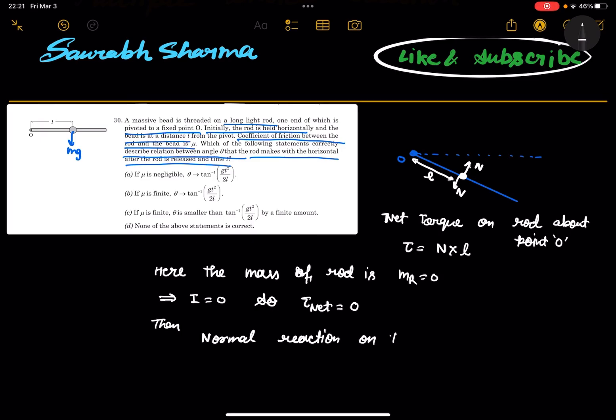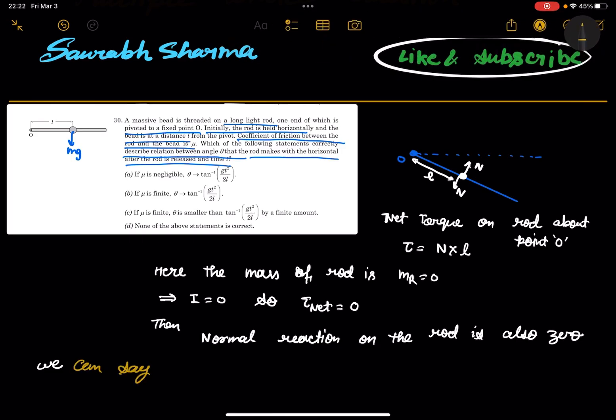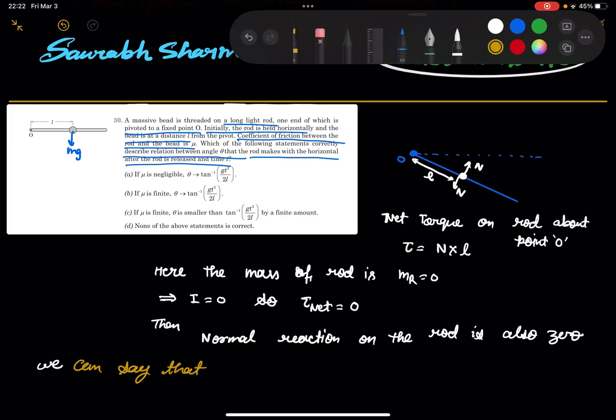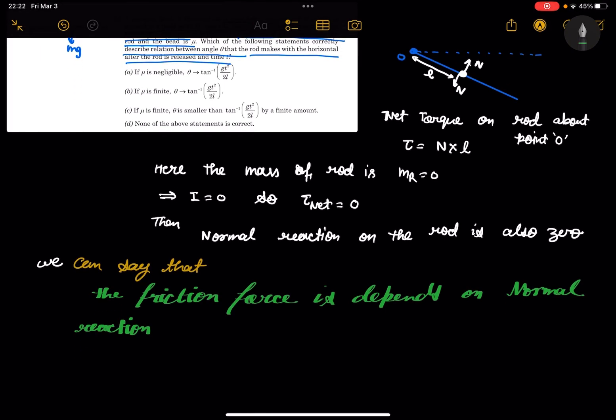My dear friend, if normal reaction is zero, then we can say that the friction is directly proportional to N. The friction force depends on normal reaction. Then if N is zero, so F friction force is also zero.